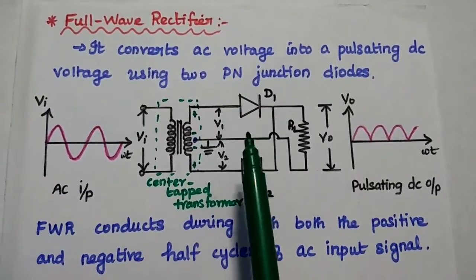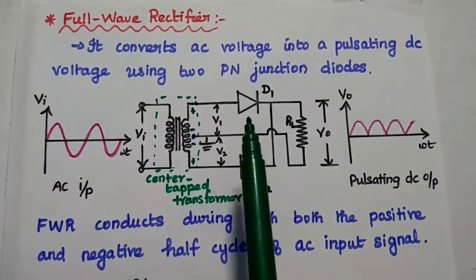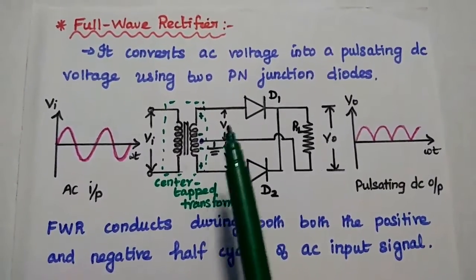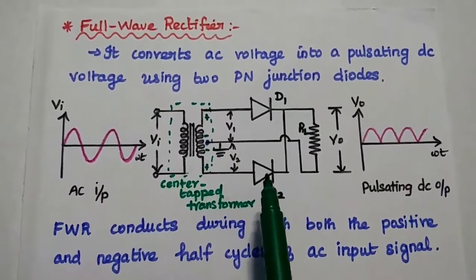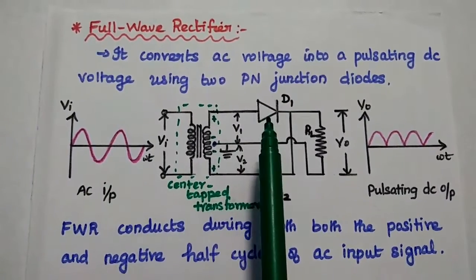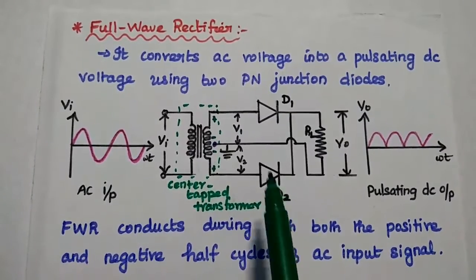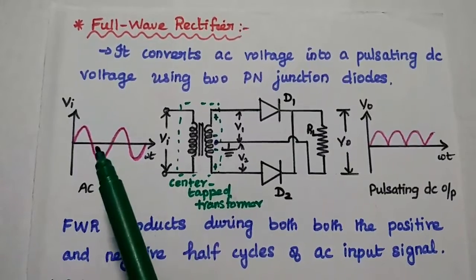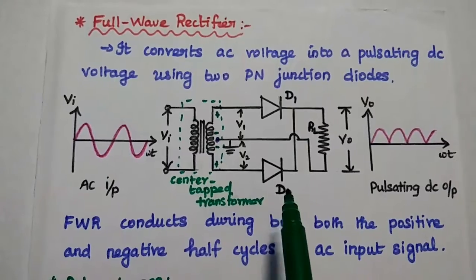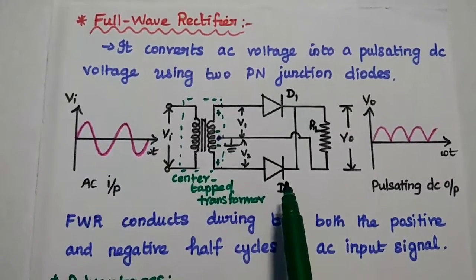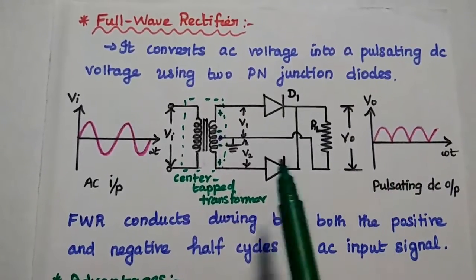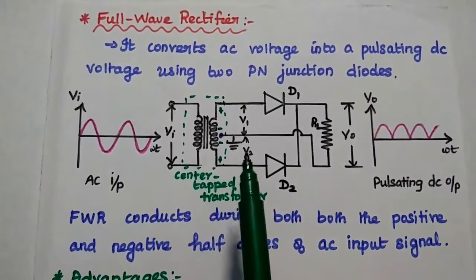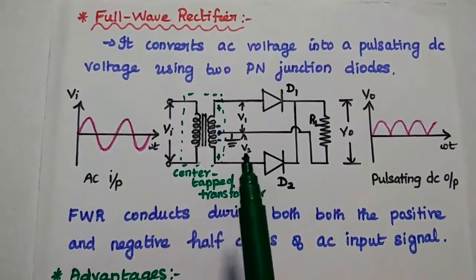Next is the full wave rectifier. In this full wave rectifier, two PN junction diodes are used to convert AC voltage into a pulsating DC voltage signal. A center tap transformer is mainly used to provide the proper input voltages to D1 and D2. During the positive half cycle, D1 is forward biased and D2 is reverse biased, so D1 starts conducting and we get the output. During the negative half cycle, D1 is reverse biased and D2 is forward biased, so D2 starts conducting and we get the output even during the negative half cycle. This full wave rectifier conducts during both positive and negative half cycles of the AC input signal, hence it is called a full wave rectifier.